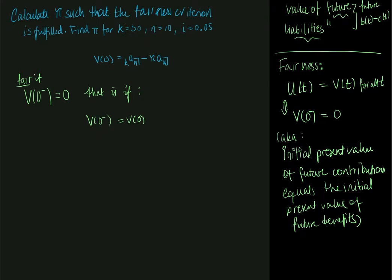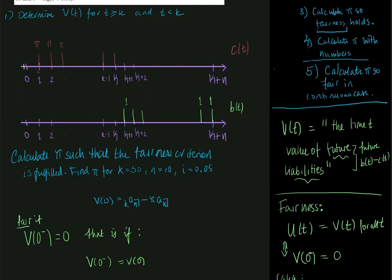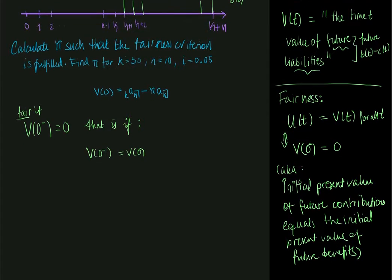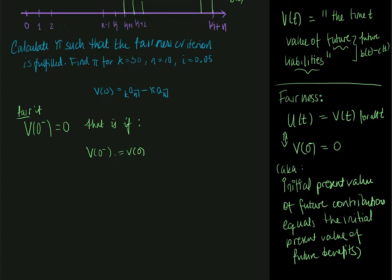And why? Well, that is because we have no payments at time 0. So we can just start exactly at time 0 and look into the future. So we know that fairness is fulfilled if v(0) is equal to 0. And we also have a calculation for v(0) from the earlier part of this exercise, which is k*an minus pi*ak.